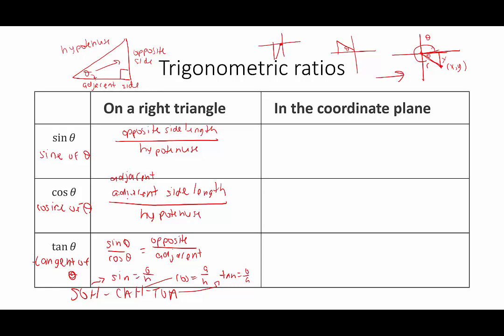In the coordinate plane, the opposite side length becomes the y-coordinate, and the hypotenuse is renamed the radius. So sine of theta is y over r, the y-coordinate over the radius. Cosine of theta is the adjacent side — the x-coordinate — over the radius, so x over r. Tangent of theta is y over x. The key takeaway: in an ordered pair (x, y), x is always associated with cosine and y is always associated with sine, because we created a right triangle between the terminal side and the x-axis.